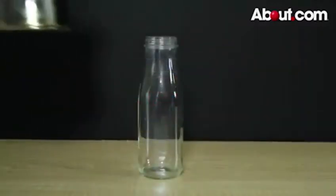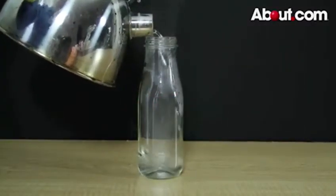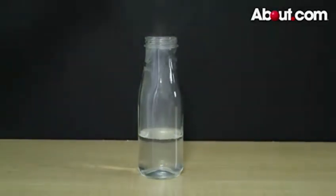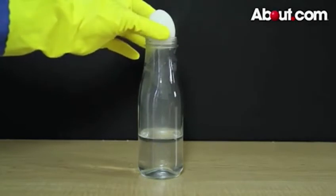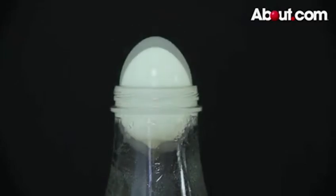To perform the experiment, boil the water in a kettle and carefully pour the boiling water into the bottle. Fill the bottle about one half full. Quickly place the egg over the mouth of the bottle. The egg will appear to jump around a bit. Wait a few minutes and the egg will be sucked into the bottle.